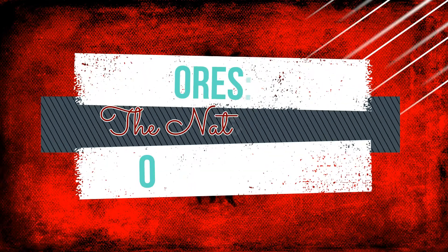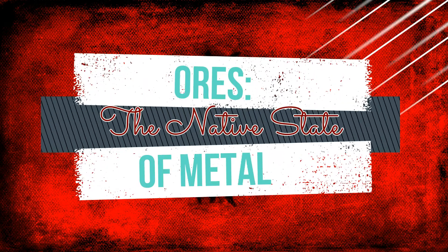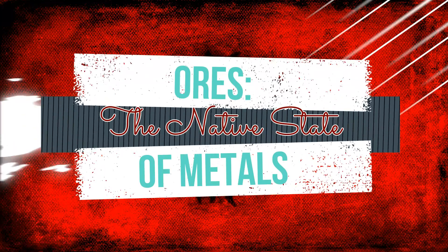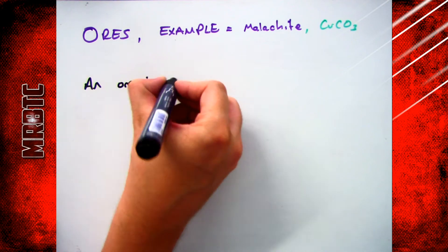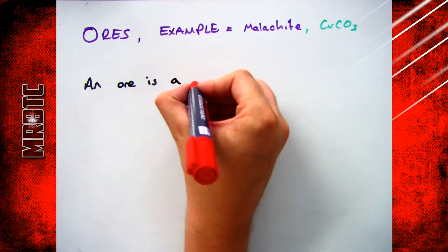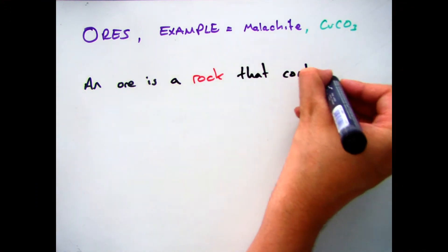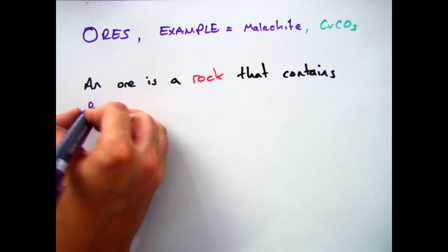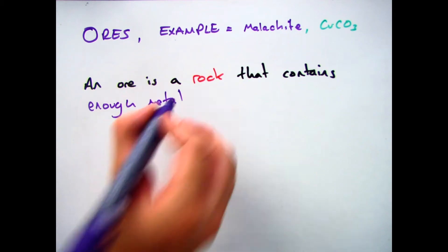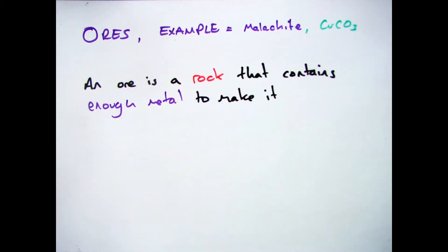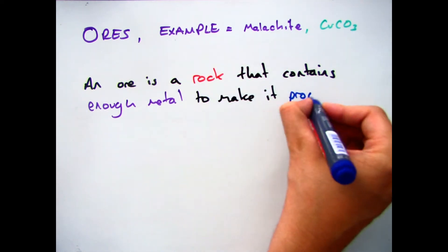Hi guys, welcome to this video looking at how metals are found in the earth, in particular what ores are. Nice and simply, if we start off with a definition: an ore is a rock that contains a metal that is profitable. So you've got to be able to get a profit out of it to make it worthwhile.